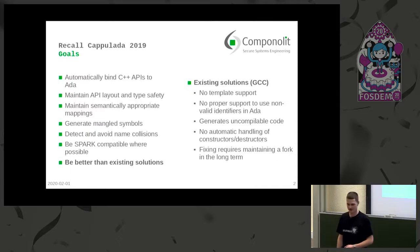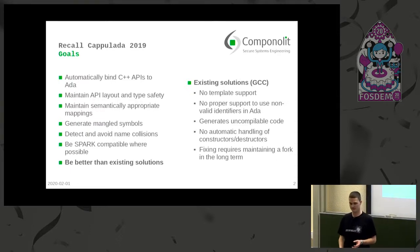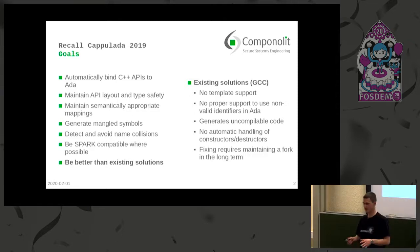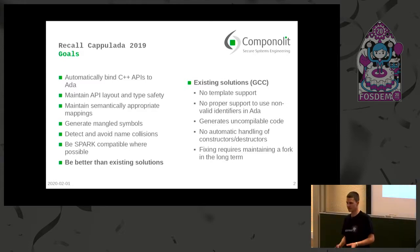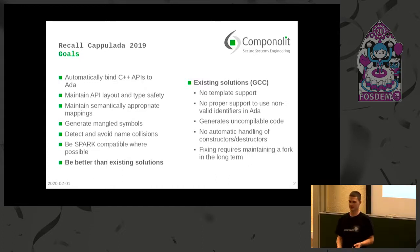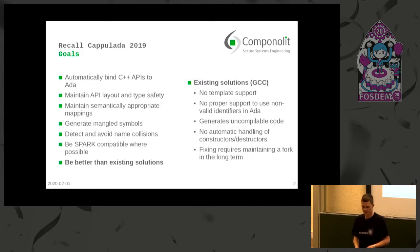So what did we say? We wanted to be better than existing solutions. We wanted to maintain the original C++ API layout. We wanted to have type safety. We wanted to have template support, because this is what most of the existing solutions were lacking. And for this we also had to implement things like C++ name mangling.